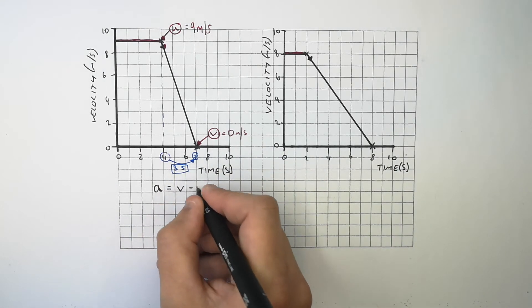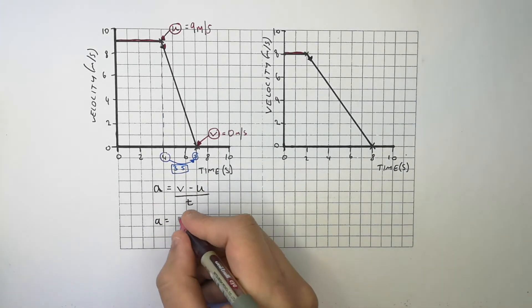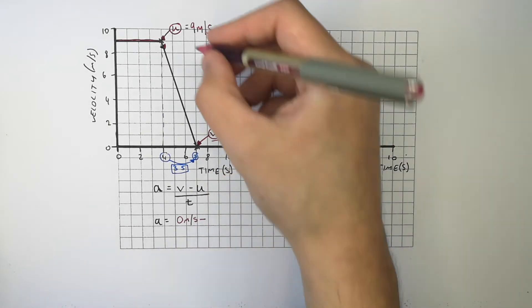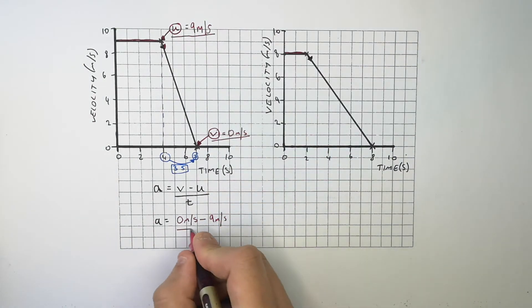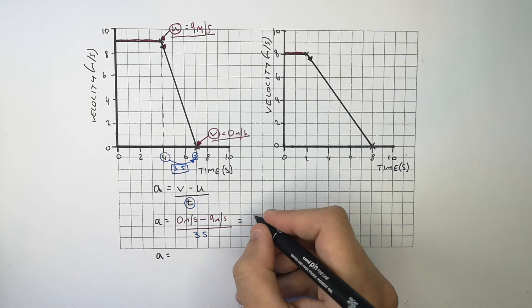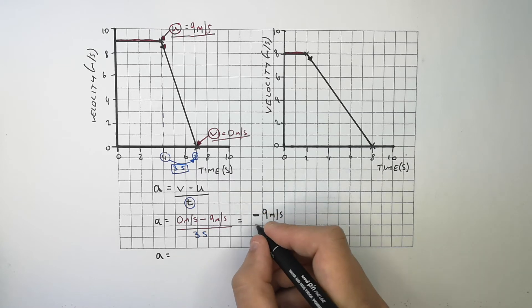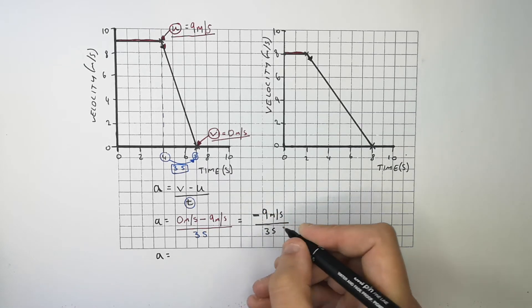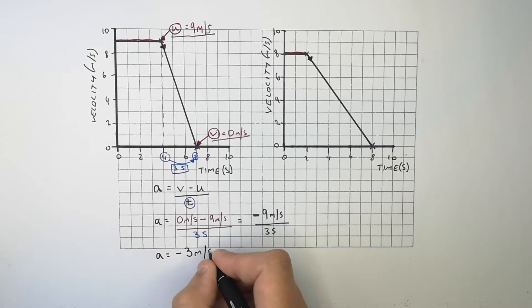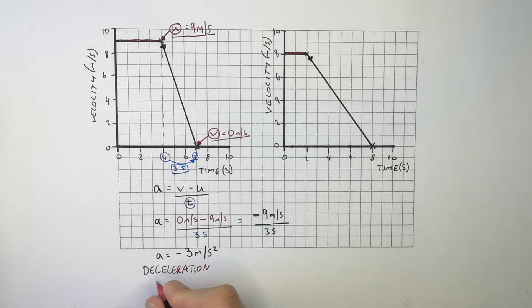Recall the equation a equals v minus u over t and substitute in the numbers: a equals the final velocity, 0 metres per second, minus the initial velocity, 9 metres per second, divided by t, 3 seconds. The change in velocity is minus 9 metres per second, divided by 3 seconds, which gives an acceleration of minus 3 metres per second squared. Minus 3 — it is a deceleration, a negative acceleration.